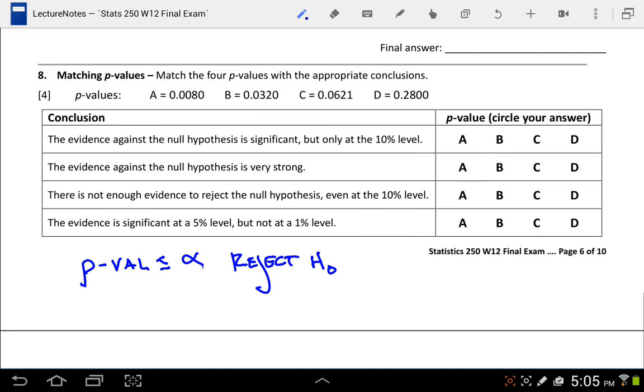So looking at the first statement, the evidence against the null hypothesis is significant, but only at the 10% level. Well, to be significant at the 10% level, that means the p-value has to be less than alpha according to our rule, so it has to be less than 10%, so it can't be D.